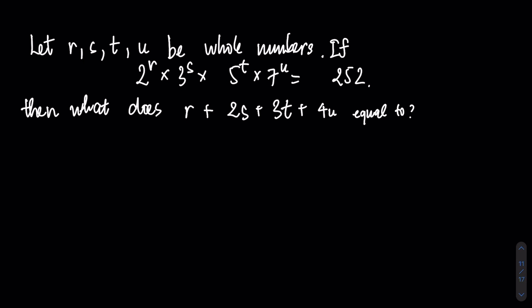Right now we are going to solve this question together. Let R, S, T, U be whole numbers. If 2 power R times 3 power S times 5 power T times 7 power U equal to 252, then what does R plus 2S plus 3T plus 4U equal to?